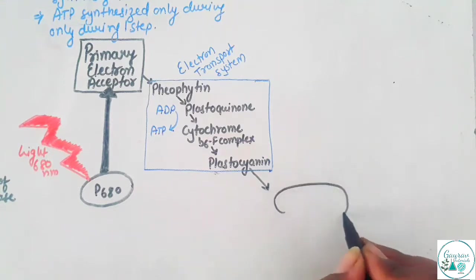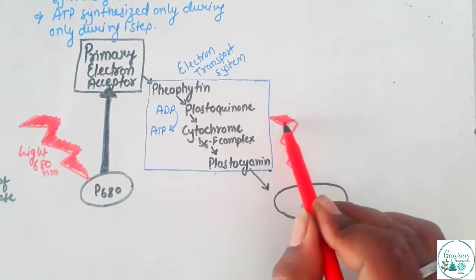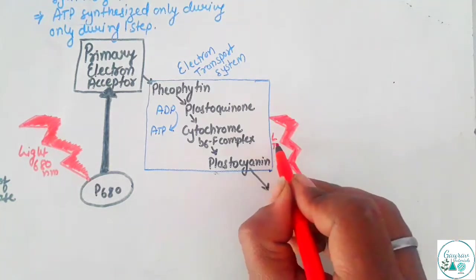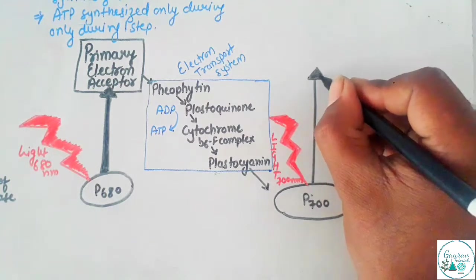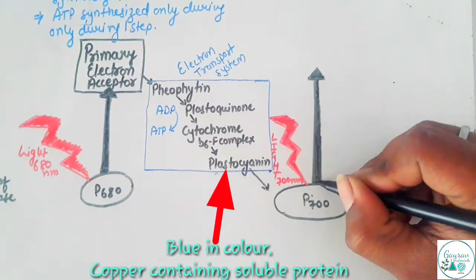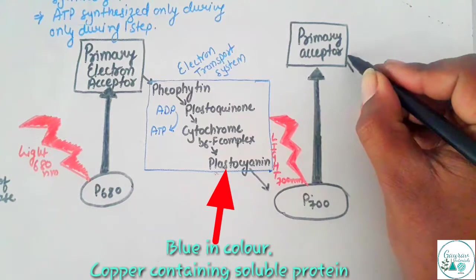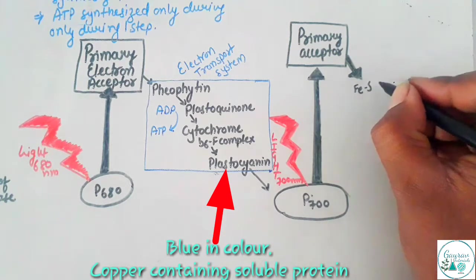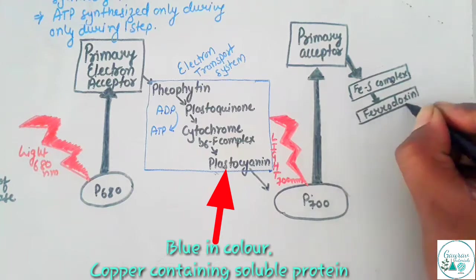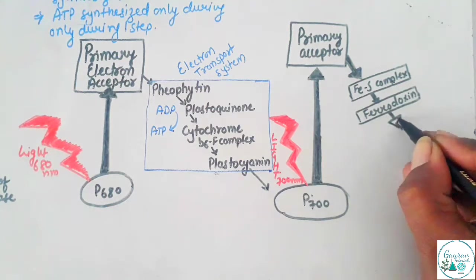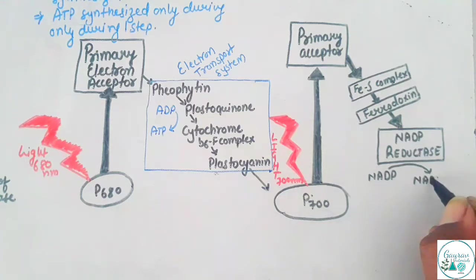In both cyclic and non-cyclic cases, the electron transport system has different components. The electron from plastocyanin passes into P700, the reaction center of PS1. When light of 700 nanometers falls onto P700, it causes excitation of the electron in the chlorophyll of P700, and this released electron is again accepted by the primary electron acceptor. This acceptor passes the electron to the iron-sulfur complex, then to ferredoxin, and then to NADP reductase. As the name suggests, NADP reductase uses these electrons to reduce NADP into NADPH2.